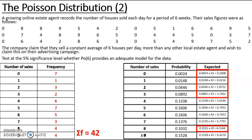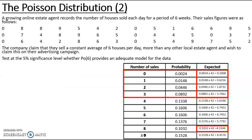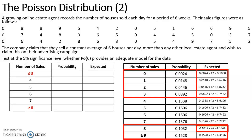I could combine seven with eight, or combine eight with nine — either are acceptable. I am going to combine eight with nine to make an 'eight and over' category. Please don't fall into the trap of combining all of those together into a zero, one, two, three and eight group, because that doesn't make any sense. For neatness I am going to rewrite the table with a 'three and under' category and an 'eight and over' category.